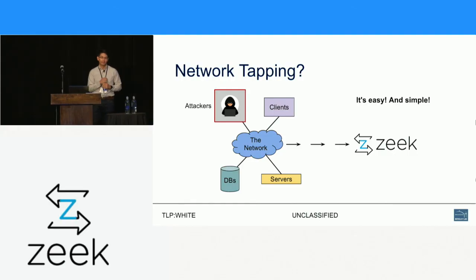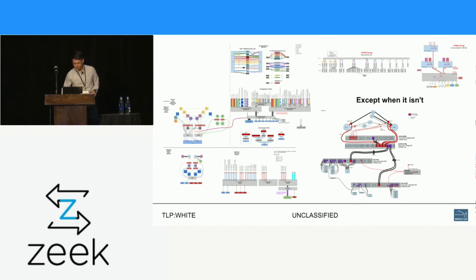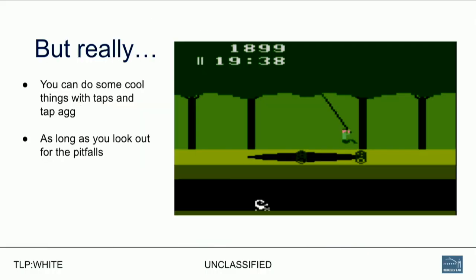Network tapping — most people are somewhat familiar with it, and it's pretty self-evident from the name. You're tapping into your network, getting a copy of packets out, and putting them into Zeek, which is simple and easy. Reality is somewhat more complicated, but actually it's not that bad. The concept of tapping is very simple, but you can do some cool and more complicated things with it.